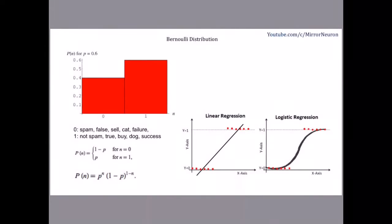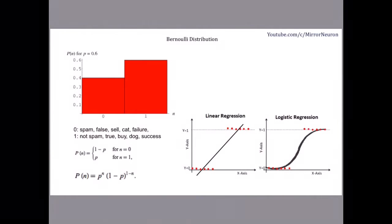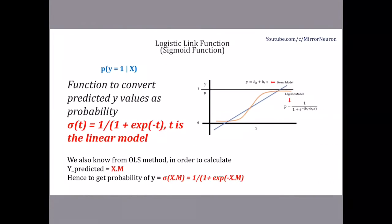As we saw in our last lecture, if we have data where the output values can only be 0 or 1, we can try to fit a linear model, but it will be a very bad fit. Instead, we need to convert this linear model — whose range goes from minus infinity to plus infinity — into something that outputs a value between 0 and 1. That is logistic regression. As you can see in the graph on the right-hand side, my linear model is given by y = b_0 + b_1*x.